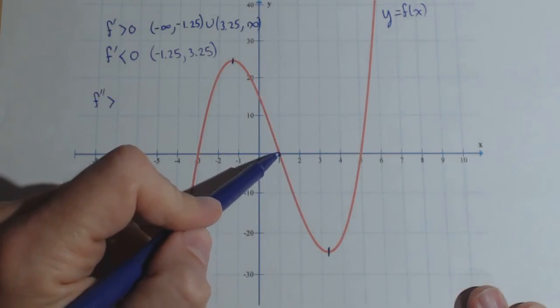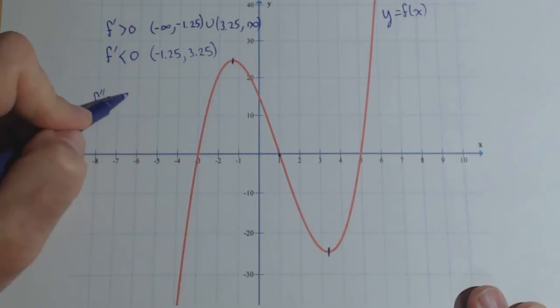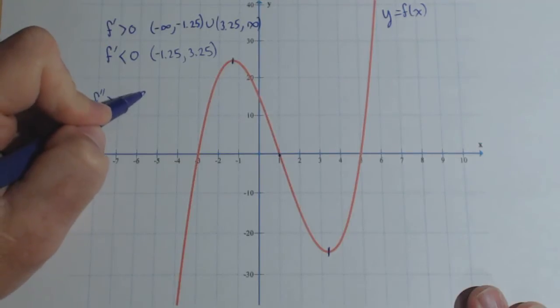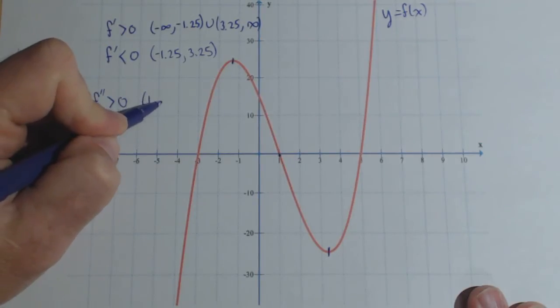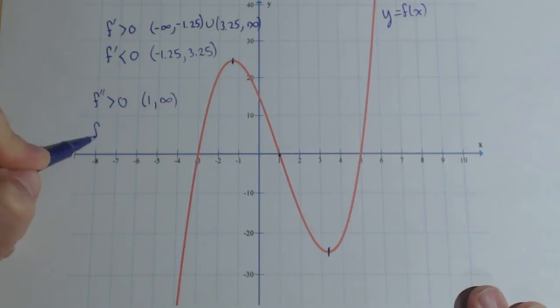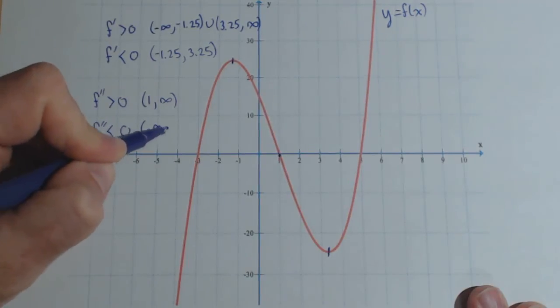It looks like at about 1 is where it switches. So it looks like the second derivative is going to be positive from 1 to infinity, and the second derivative is going to be negative from negative infinity to 1.